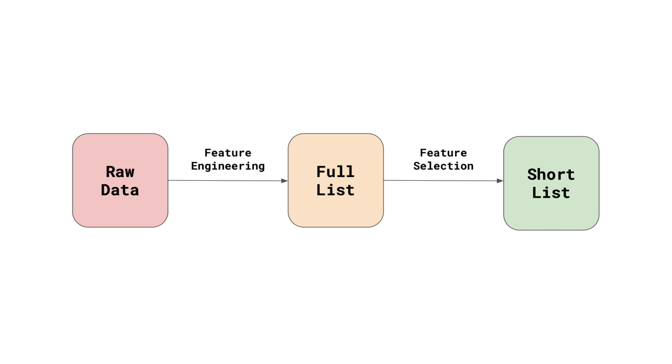Feature selection involves narrowing this down to a shortlist of between 20 and 40 features. Depending on your model, there could be another stage of feature selection, where you select a final list of model features. For linear models, this can be around 8 or 10 features. We will focus on the first stage: creating a shortlist.